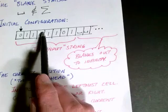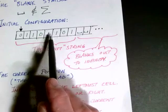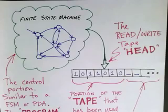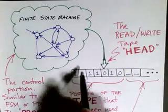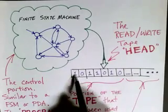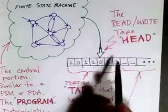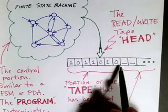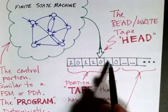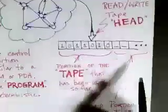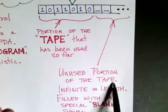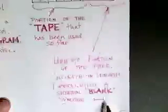We can read a symbol, then write a new symbol in its place, and then move left or right to the adjacent symbol. Here's a picture of a Turing machine in the middle of some computation. We've got our tape, and at any point, some cells at the left end have been used — containing at least the input and possibly other modified cells. Out to infinity, we have the unused portion of the tape filled with the special blank symbol.